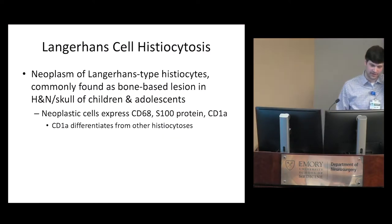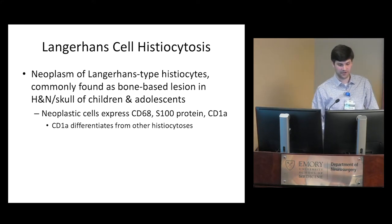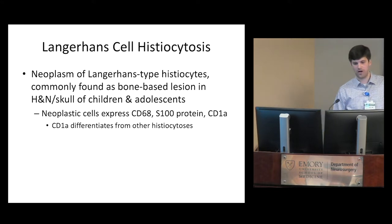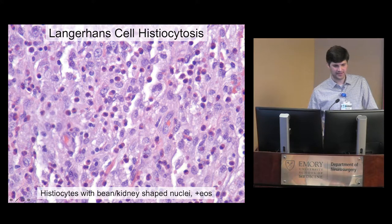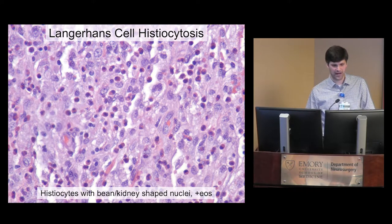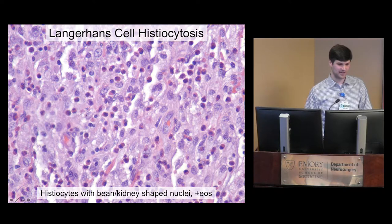Langerhans cell histiocytosis occurs in children, sometimes as bone-based skull lesions. It's the most common histiocytosis, defined by histiocytic markers like CD68, plus S100 protein and CD1A to confirm Langerhans cell identity. Under the microscope: voluminous cytoplasm typical of macrophage-derived tumors, with nuclei showing a characteristic bean-shaped or kidney-shaped appearance. Eosinophils are characteristically sprinkled in — these are very eosinophil-rich tumors.